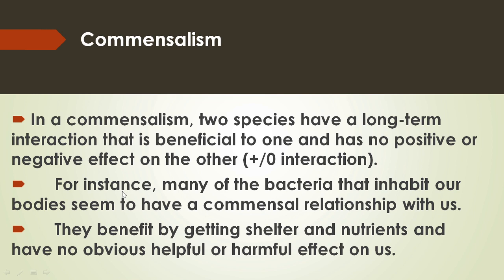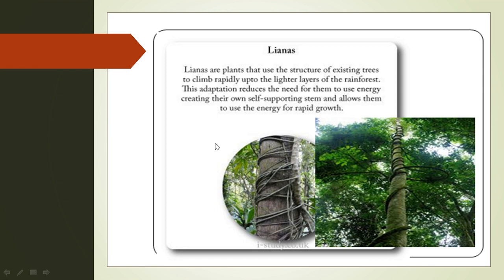Many of the bacteria that inhabit our bodies seem to have a commensal relationship with us — they benefit by getting shelter and nutrients and have no obvious helpful or harmful effect on us. Another example of commensalism is lianas, which are plants that use the structure of existing trees to climb rapidly up to the lighter layers of the rainforest. This adaptation reduces the need for them to use energy creating their own self-supporting system and allows them to use the energy for rapid growth.